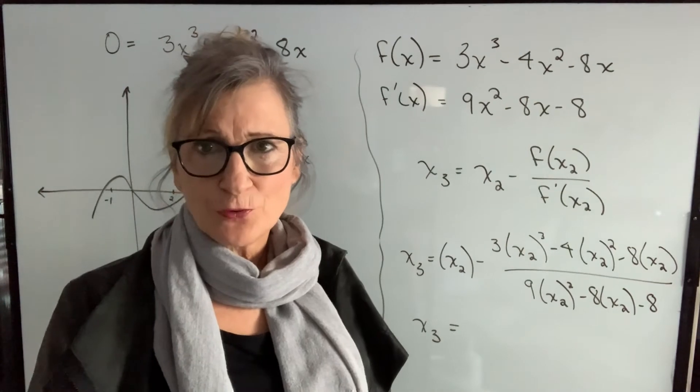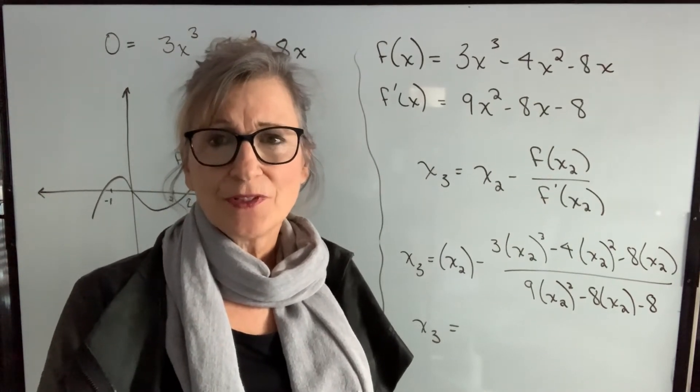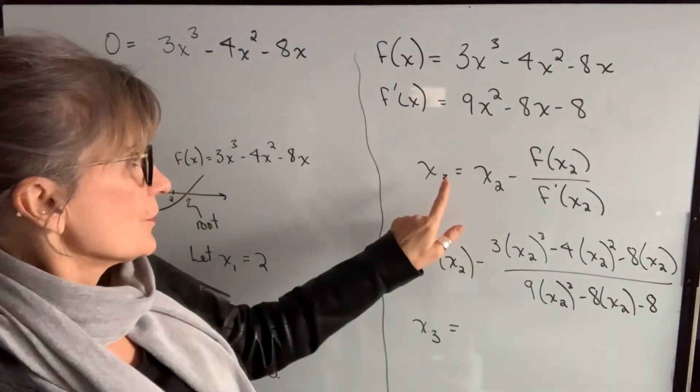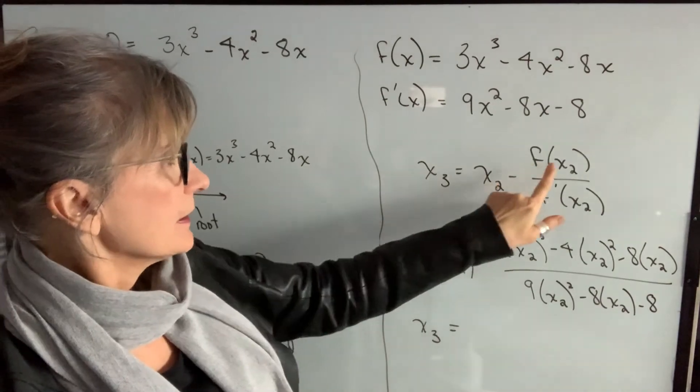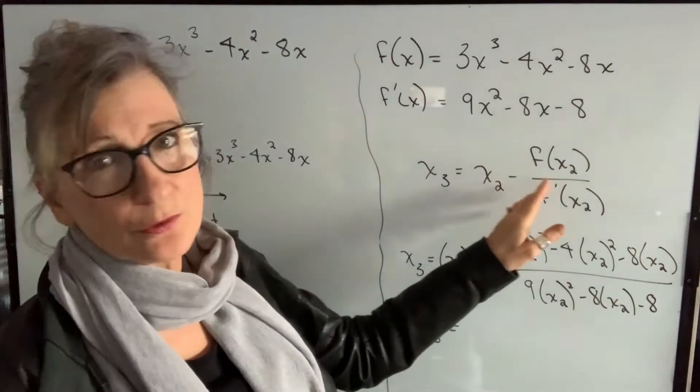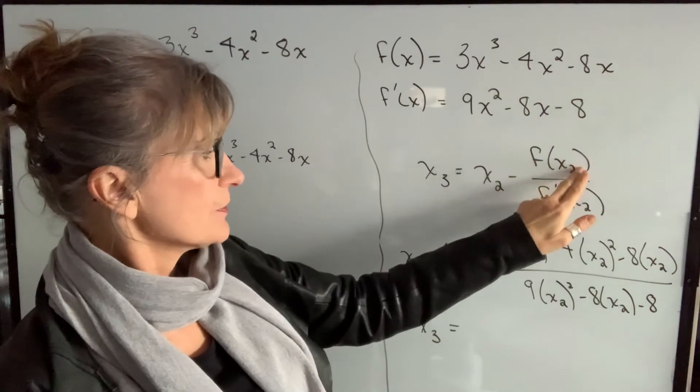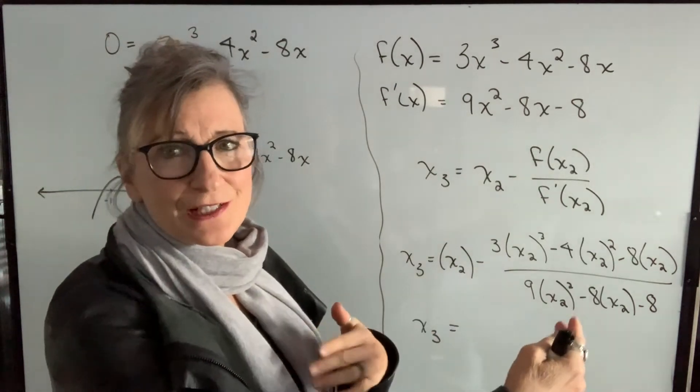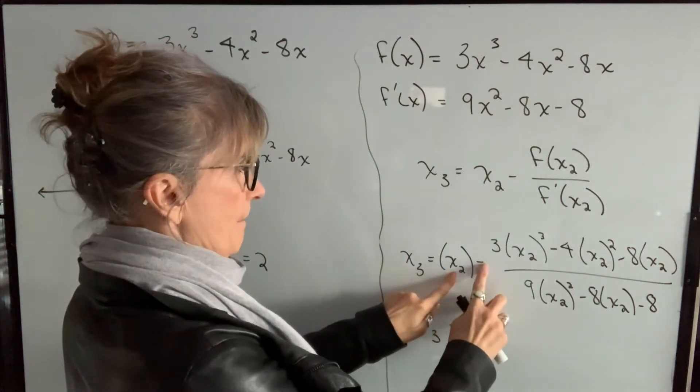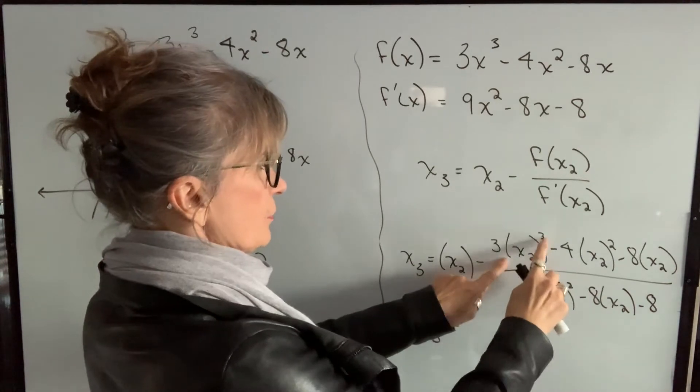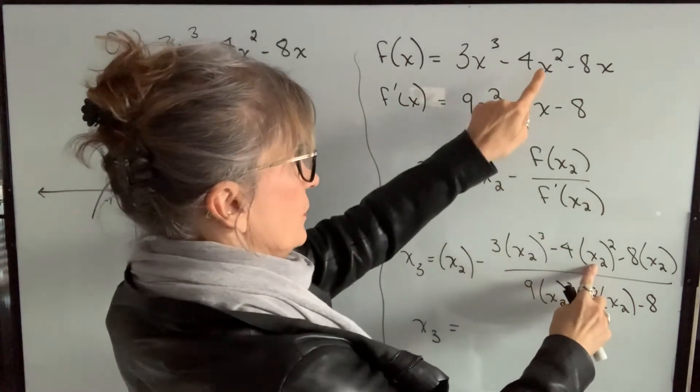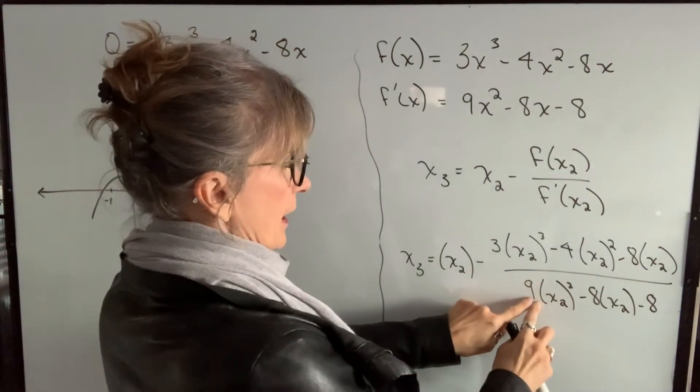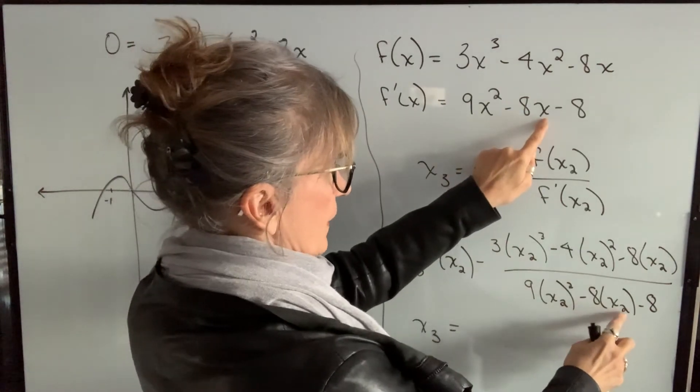Once you've obtained a value for x2, we're now going to use the value, but the actual value in your calculator, to find x3. So x3 will be that new value of x in Newton's formula. So it'll be x2 minus f(x2) divided by f'(x2). So I'm not going to write the number because it's a lot of decimal places. So I'll just put x2 minus f(x2) will be three times x2³ minus four times that value squared minus eight times that value divided by nine times that value squared minus eight times that value minus eight.